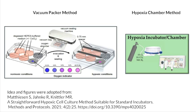There are several different methods of inducing hypoxia, including some that use chemicals. In this video we are going to go over two methods of creating hypoxic environments for cells. The first is a simpler, cheaper option that involves vacuum packing the cells as pictured on the left. The second is a more advanced and costly method using a hypoxia chamber as pictured on the right. Both will be explained in the following video, starting with the simple vacuum packer.